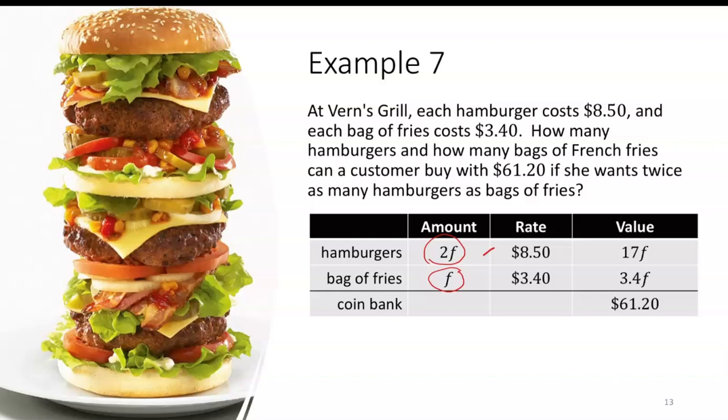And how it always works is that the amount times the rate is going to give you the value, sort of like rate times time is distance. 2 times 8.5 is 17F, and then F times 3.4 is 3.4F. Now this last column is going to give us our equation, so this is going to be the 17F that you paid for the hamburgers, the 3.4F you paid for the fries, that should equal to the $61.20.